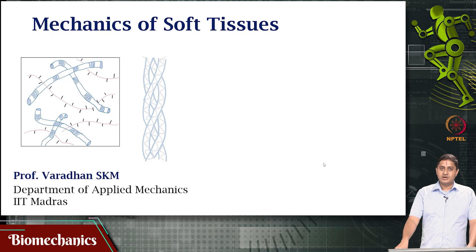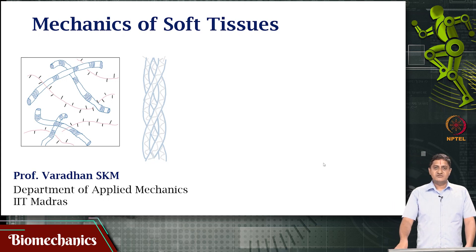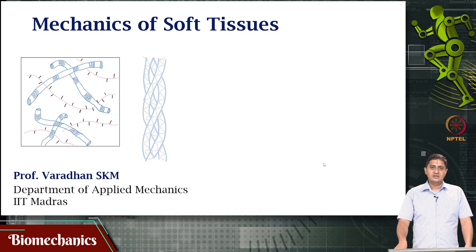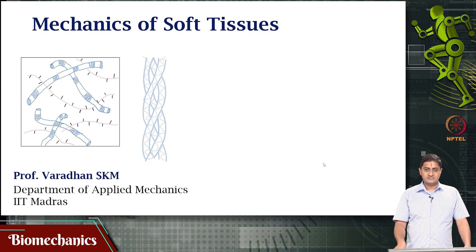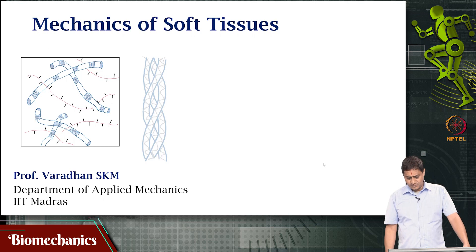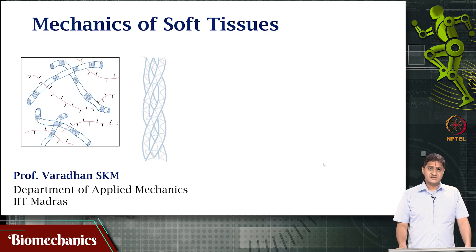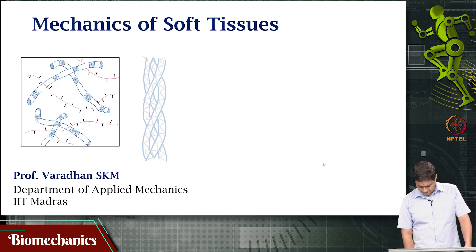Welcome to this video on biomechanics. We have been looking at biomechanics of soft tissues, specifically in the last few classes, we have been looking at the mechanical properties of tendons. We looked at stress-strain relations, the nature of tendon forces, and developed some models of non-linear elasticity in the toe region of a tendon. In the physiological region, the elasticity is not linear. The modulus changes with deformation, and we developed some models of this.